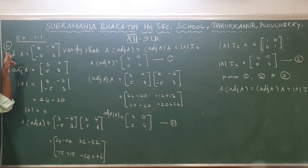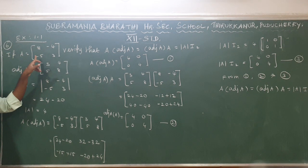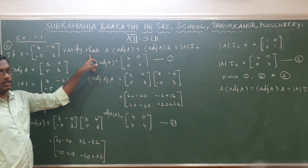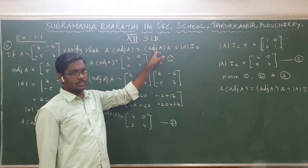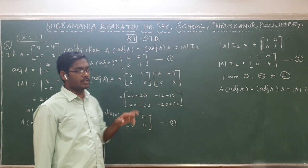Question number 1.1, number 6. If A equals the matrix [8, 4; 5, 3], verify that A times adjoint of A equals adjoint of A times A equals determinant of A times I₂.